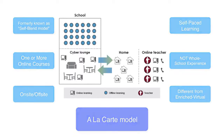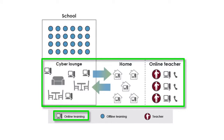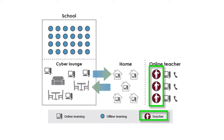I would like to point out some of the basics of this diagram. Right here are the online learning labels, and this occurs both on-site and off-site. Here's the offline learning at school. And here are your teachers, which in this scenario are online teachers. In many cases, the online teacher is also the same face-to-face teacher at school.